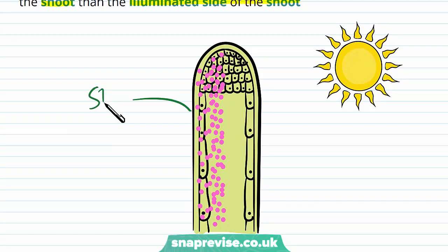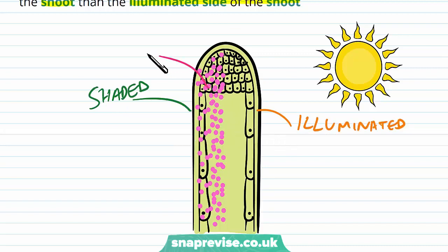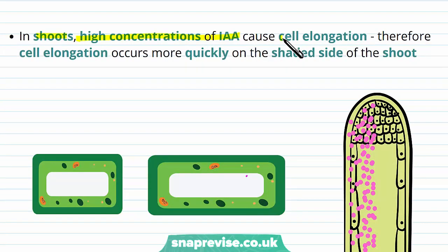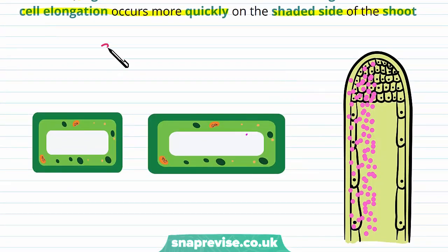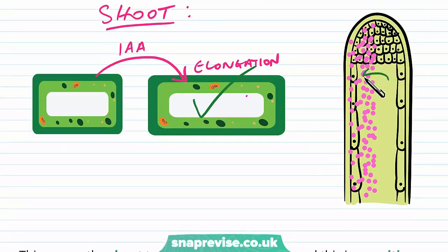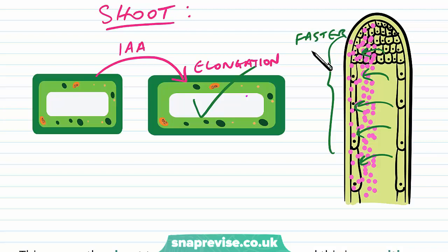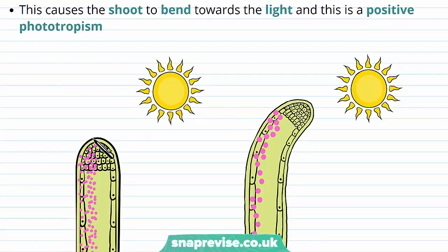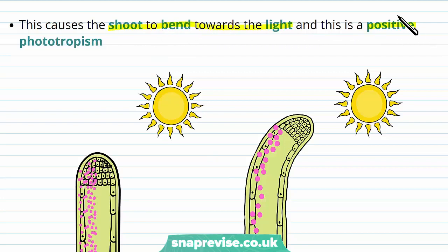We have the shaded side and the illuminated side, and because the IAA has moved over to the shaded side, the concentration is higher there than on the illuminated side. In the shoots, a high concentration of IAA encourages cell elongation, so cell elongation occurs more quickly on the shaded side. The purpose of IAA in shoot tips is to trigger and encourage cell elongation, and since the auxin has moved to the shaded side, cell elongation occurs faster and more so on the shaded side than on the lit side.